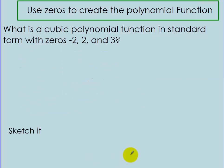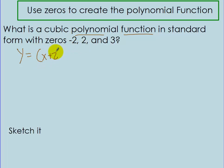Now we can use the zeros to go backwards and create a polynomial function. So what is a cubic polynomial function in standard form with zeros negative 2, 2, and 3? If my zeros are those, then for a zero of negative 2 you need (x plus 2), for a zero of 2 you need (x minus 2), and for a zero of 3 you need (x minus 3).